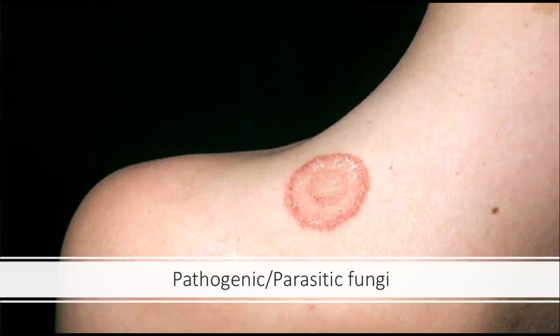Here is another pathogenic parasitic fungus: ringworm. You may have thought it was an animal because of the name 'worm,' but it is actually a fungal infection. You can get it from contacting surfaces that have had it on them, and if you've ever had it, it is quite difficult to get rid of.